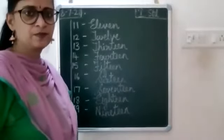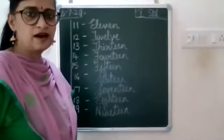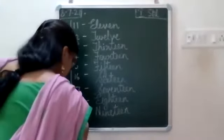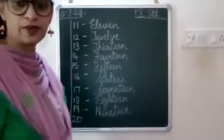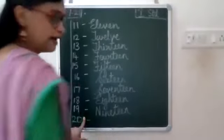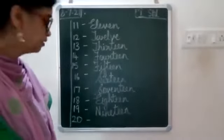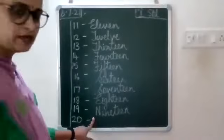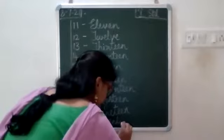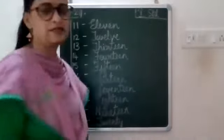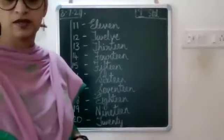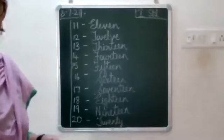Hope all of you will have written. The last number is 20. Leave a finger space, put a small dash, then again leave a finger space, write capital T-W-E-N-T-Y, 20.